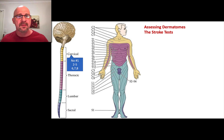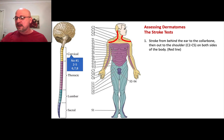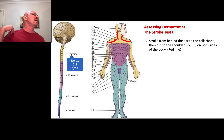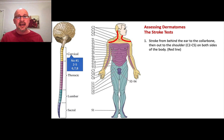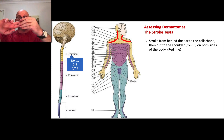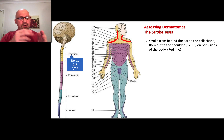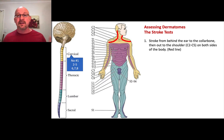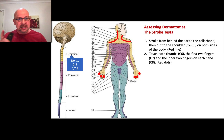We test the cervical dermatomes C2 to C5 at the top of the body, and C6, C7, and C8 on the hands. Take your scissors or your hand, start above the ear, come down the side of the body, and across the elbow — on each side. Ask: how does that feel? Can you feel me? Does it feel abnormal? A light stroke; we're not pressing hard. That's C2 to C5. Then C6 is the thumbs — can you feel me touching your thumb? C7 is the next two fingers, and C8 is the other side of the hand. If they can feel all of that and it doesn't feel weird, they've passed the cervical exam.